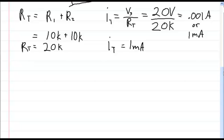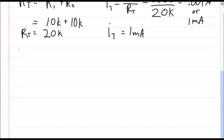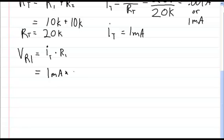If you know the total current flowing through this whole circuit, it's always going to be the same current. The current going through R1 is exactly the same as the current going through R2. So if I want to know this voltage, I just need a reworking of the formula — current equals voltage divided by resistance. So VR1 is equal to the total current times R1, which is 1 milliamp times 10 kilo ohms, giving you 10 volts.